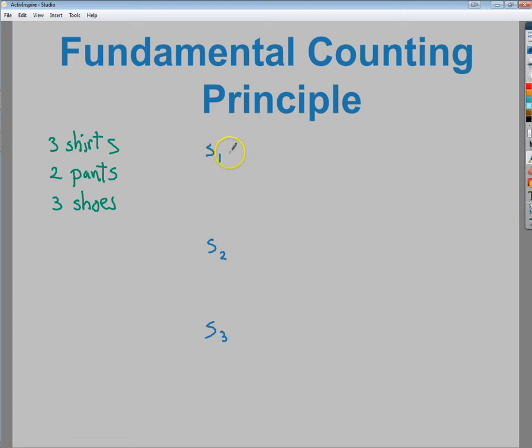With shirt one, I could wear pair of pants one or pair of pants two. I can't wear both. I mean, I guess I could, but that would be kind of ridiculous. I'm going to make this an H, this a P, and this an S, that way you know what I'm talking about. Same with shirt two, I could wear either pair of pants with those. And the same with shirt three, I could wear either pair of pants that I want.